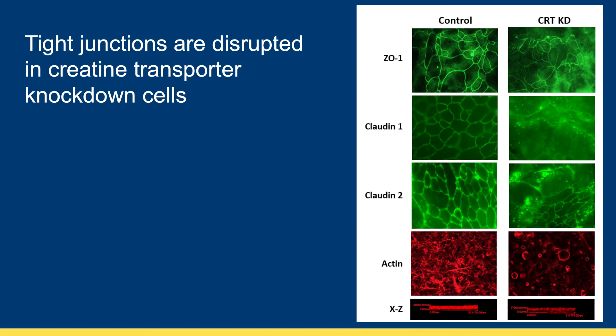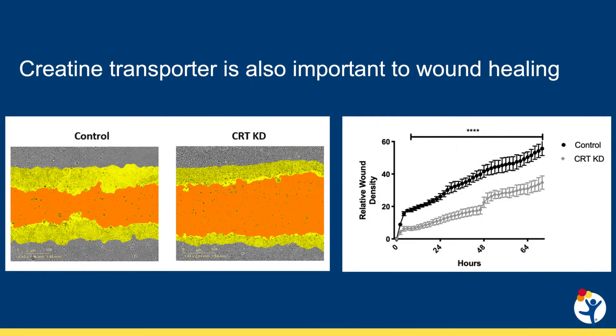We also found dysregulation and reduced quantity of actin polymerization in the red staining. Another important and energy dependent activity of intestinal epithelial cells is wound healing. It requires cell migration and proliferation. We hypothesized based on our preliminary data that the creatine transporter knockdown cells would have diminished wound healing. Indeed, we found in a scratch wound study that wound healing was defective in the knockdown cells, with noticeable remaining wounds as indicated by the orange shaded area. Quantification on the right identified a statistical difference in wound healing.